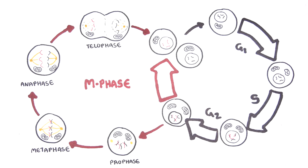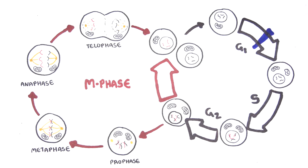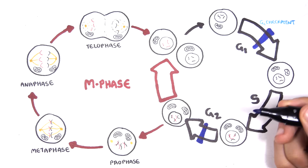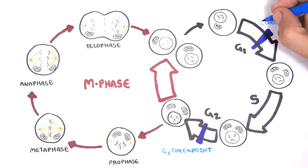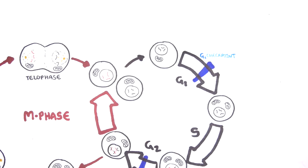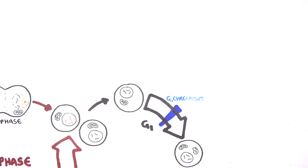The cell cycle is a continuous process and so you have checkpoints during the cell cycle to make sure that there are no abnormalities in the cell before it progresses to each phase. These checkpoints include the G1 checkpoint, the G2 checkpoint, and the M phase checkpoint. One thing these checkpoints look at is whether there are abnormalities, damage, or mutations to the DNA.